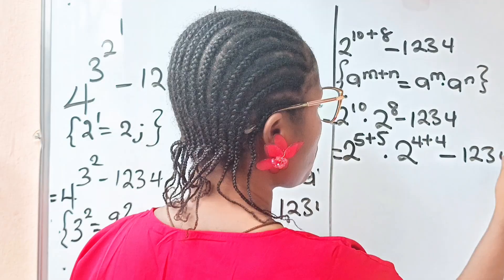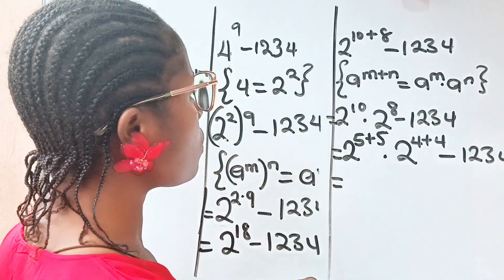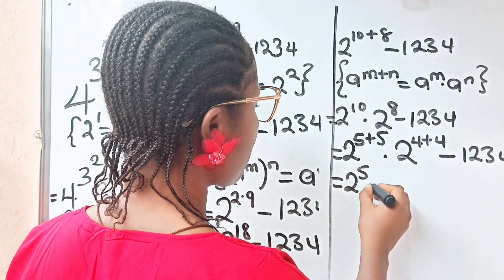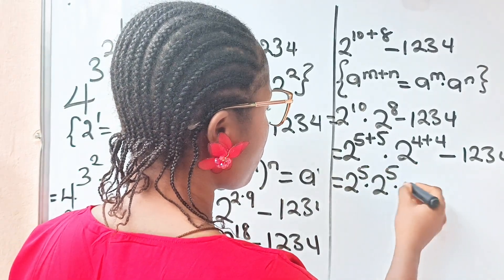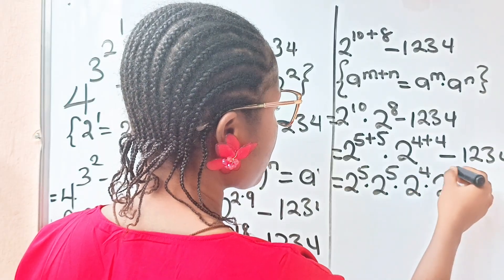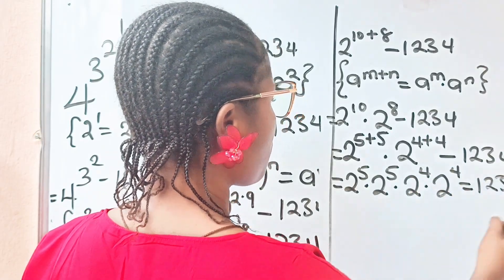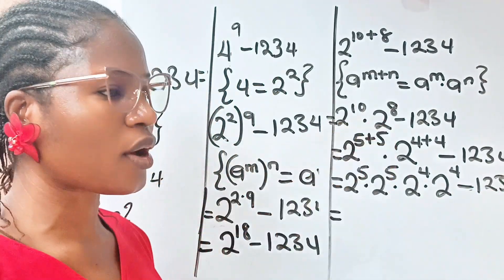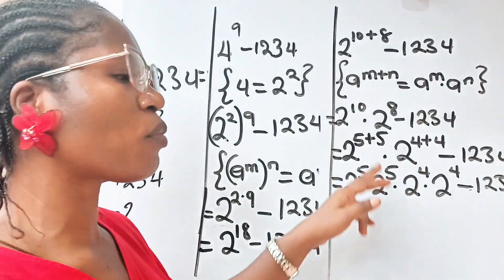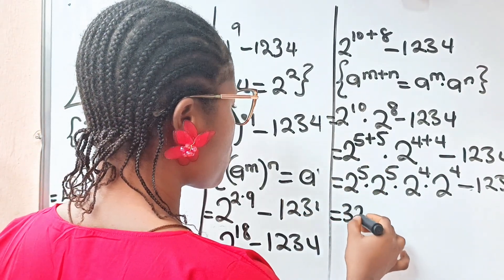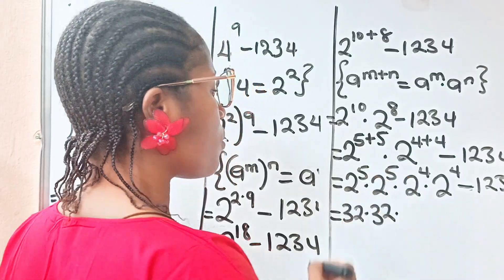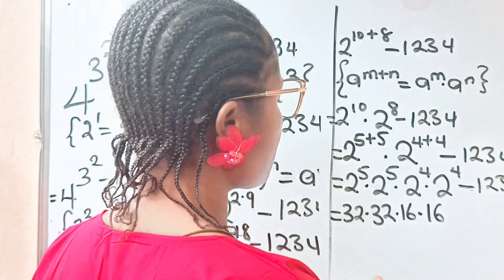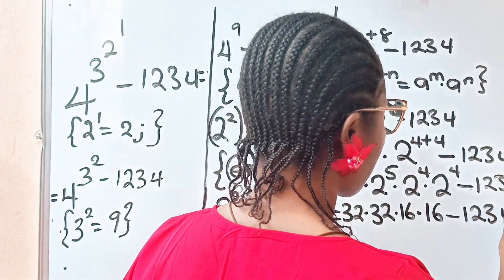For my own sake, I don't. So, 2 to the power of 10, I would rather reduce it to something simpler that I can remember easily, which is 2 to the power of 5 plus 5. And then, 2 to the power of 8, I would reduce it to 2 to the power of 4 plus 4, then minus 1234. So, this is equal to, applying this law, we will have 2 to the power of 5 multiplied by 2 to the power of 5, multiplied by 2 to the power of 4, multiplied by 2 to the power of 4 minus 1234.